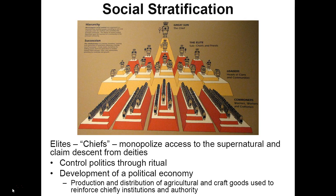The chief controlled the production of agricultural foods — all peasants had to pay tribute, bringing a portion of their production to him. He stored it and redistributed it through the community, either through financing public feasts to repay obedience and allegiance, or distributing resources in times of need, such as when a village's crops failed. This is how the chief created allegiance and dependence upon him.